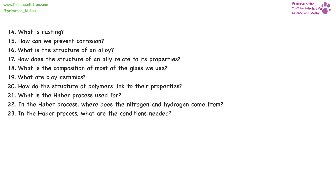Rusting is when iron mixes with water and oxygen to produce iron oxide. We can prevent corrosion by removing one of the things that causes rusting — so oxygen or water — or we can cover it to prevent oxygen or water getting in. So we can galvanize it, covering it with a different metal, or we can cover it with oil to prevent oxygen or water getting in.